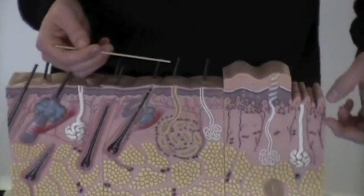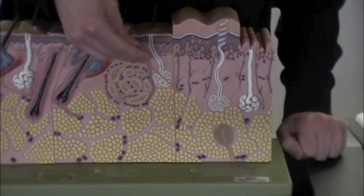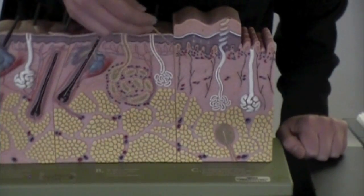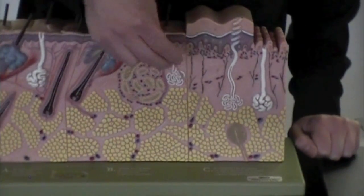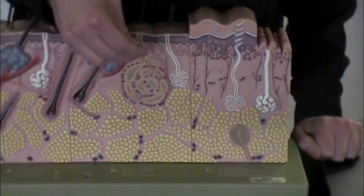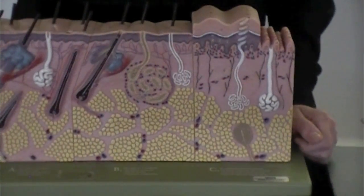Next layer you need to know is the dermis. That's anything below that epidermis and above that hypodermis. So this is all dermis. These little yellow things are representing fat globules, and so from the fat globules on down, that's hypodermis. That's all you need to know for the layers.